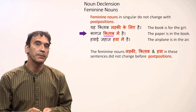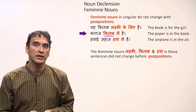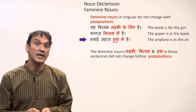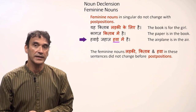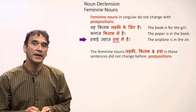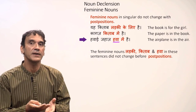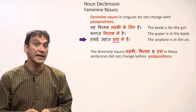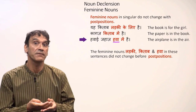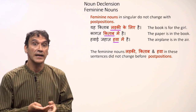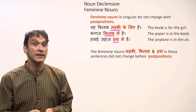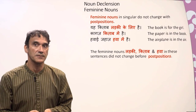'Kaagaz kitab mein hai' — the paper is in the book; 'kitab' stays the same. 'Hawai jahaz hawa mein hai' — the airplane is in the air. The word 'hawa' (air) is feminine in Hindi, so it does not change even though it ends in 'a.' The nouns 'ladki,' 'kitab,' and 'hawa' are all feminine, which is why they do not change before postpositions.